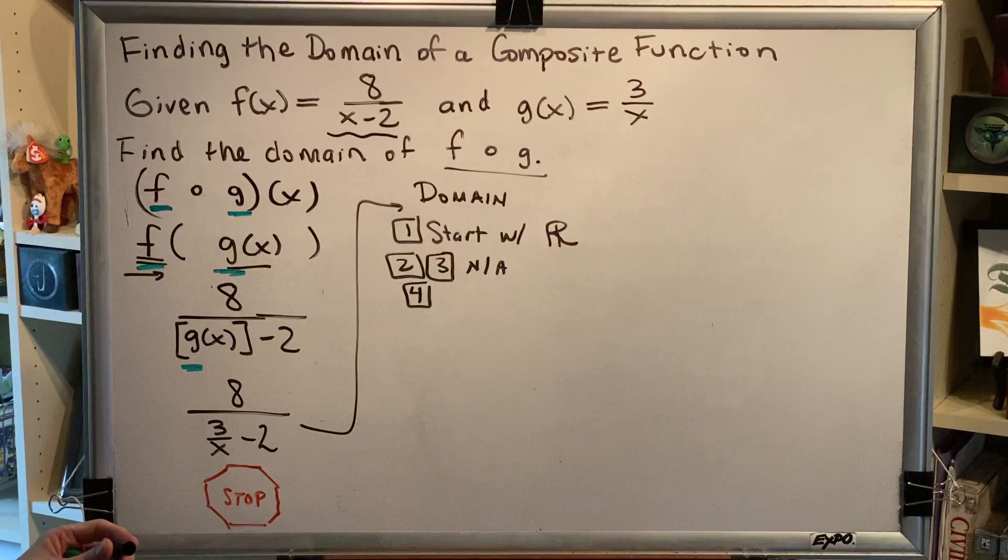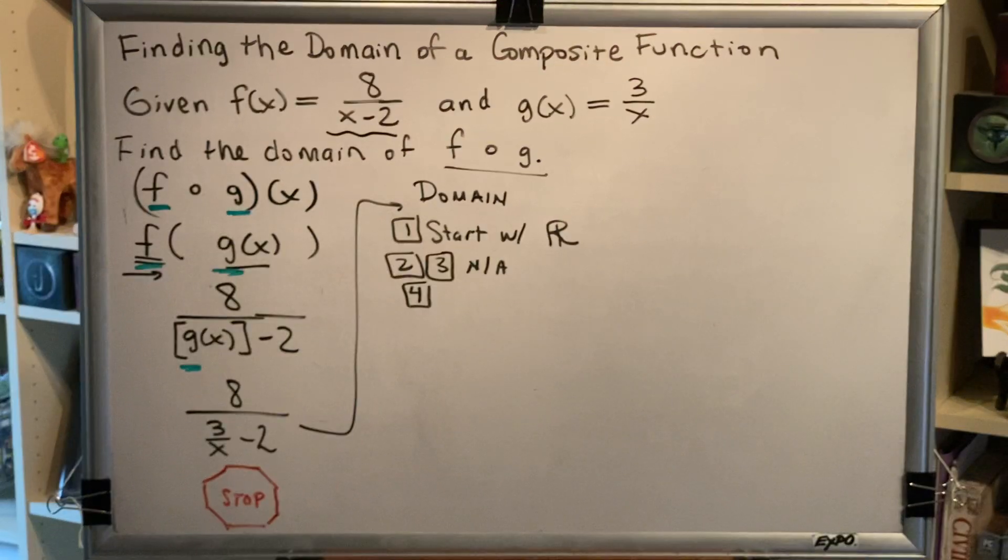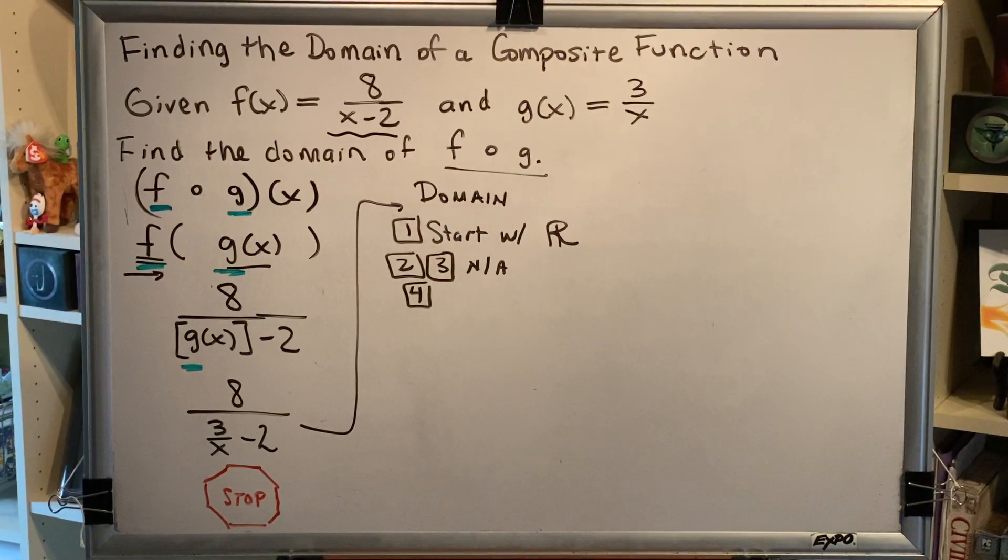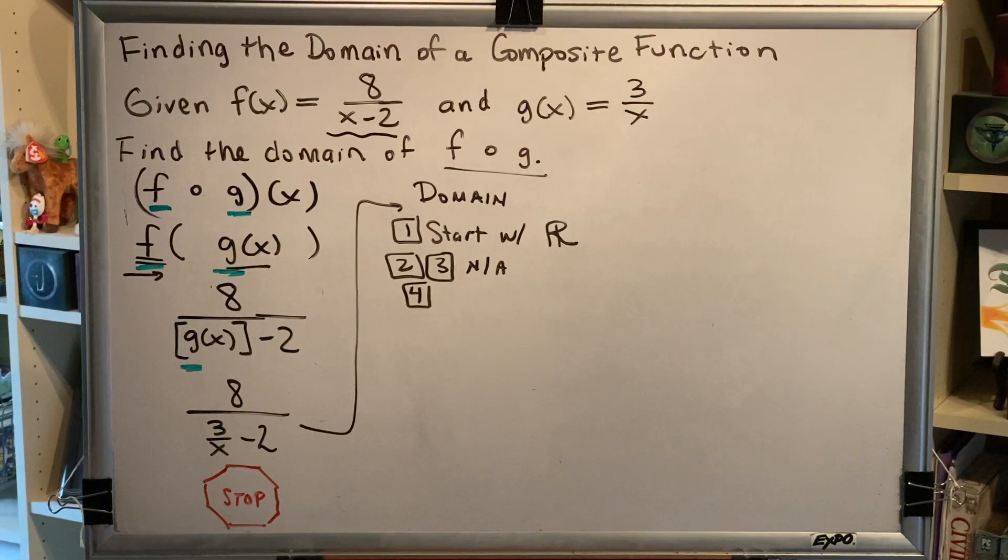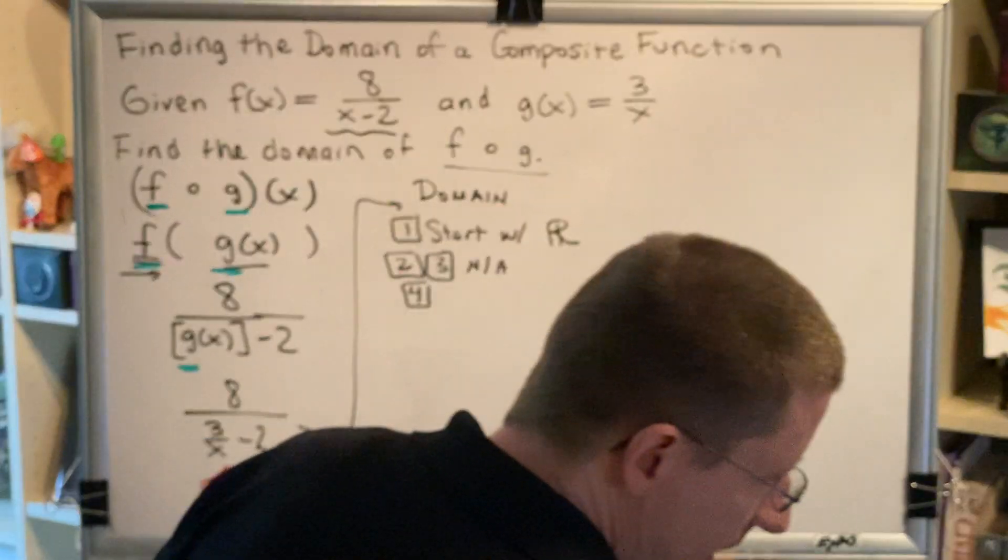Step four is to look for denominators. Well, it turns out we have two of those. How do you know we have two? Because there are two fraction bars. Each fraction bar is a denominator.